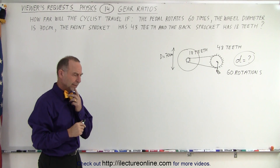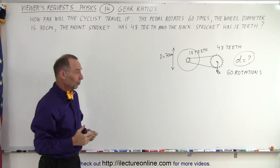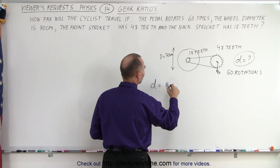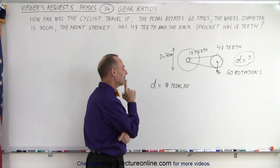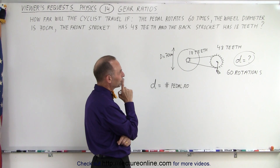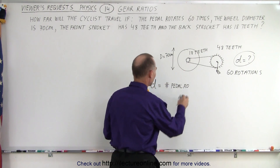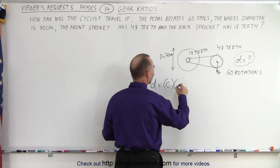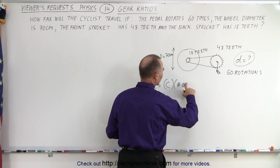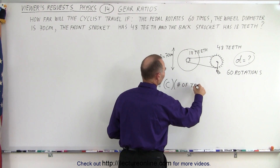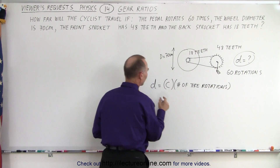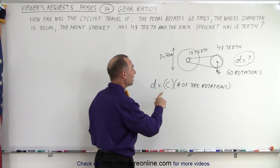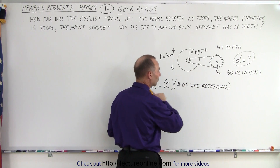How do we do that? We need to come up with an equation that describes the distance. Let's think about it this way: the distance equals the circumference of the bicycle wheel times the number of tire rotations. That's a better way of thinking about it. One time going around equals the circumference times the number of times the wheel goes around — when we multiply those two we have the total distance traveled.